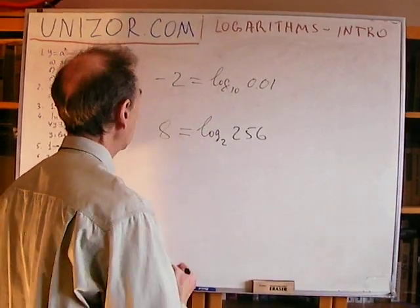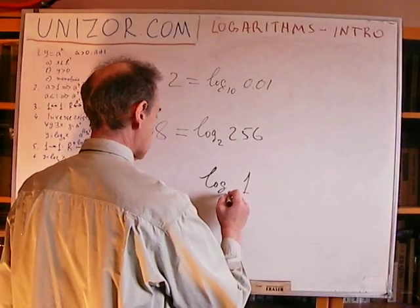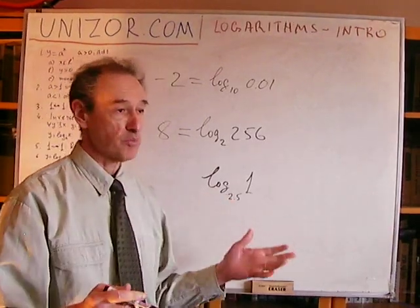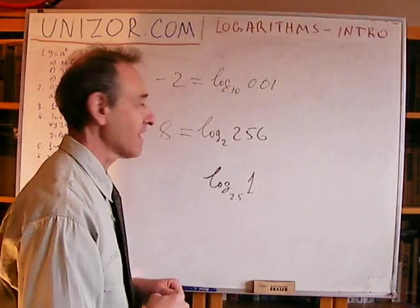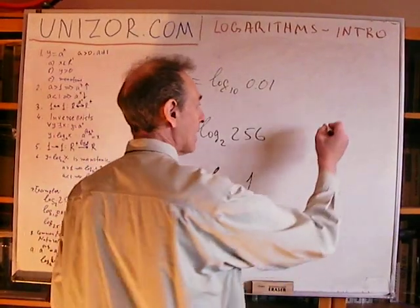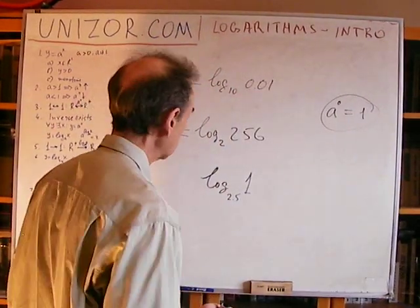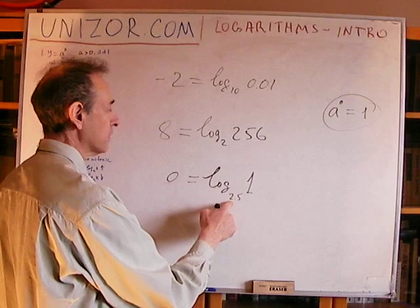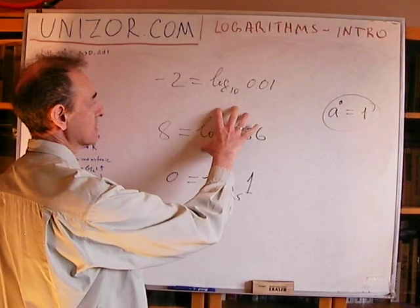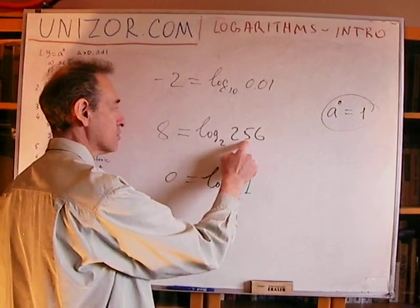The third example is logarithm of 1 with base 2.5. I put base 2.5 — not exactly a nice number — but the argument is 1. Remember that any number to the power of 0 gives you 1. That's why this is equal to 0, because 2.5 to the power of 0 gives 1. So whenever you see the logarithm, it signifies the power into which you have to raise the base to get the argument.